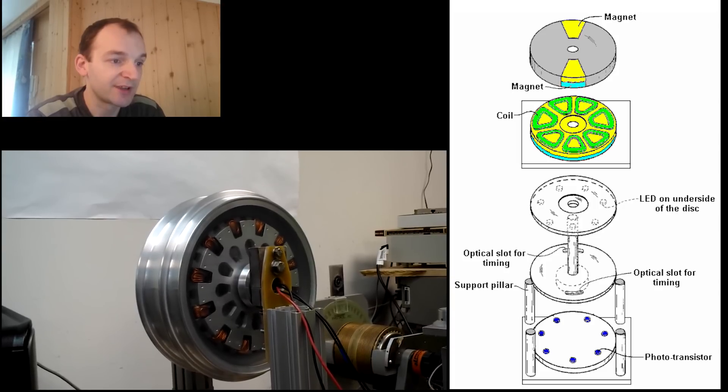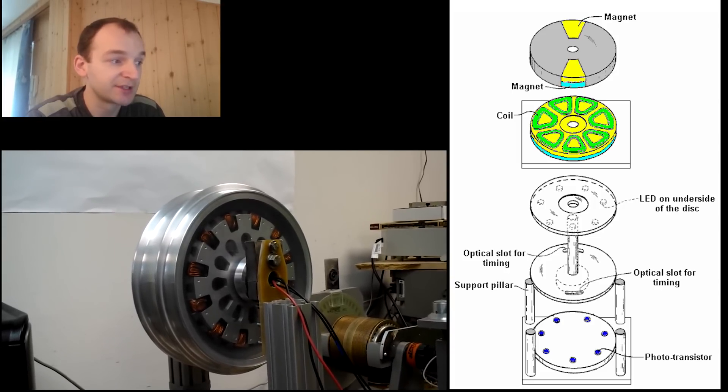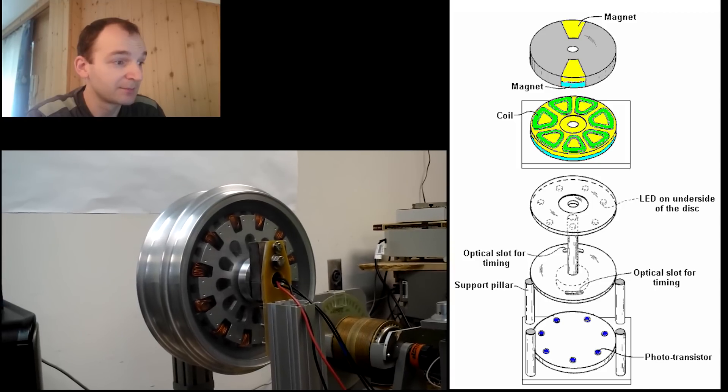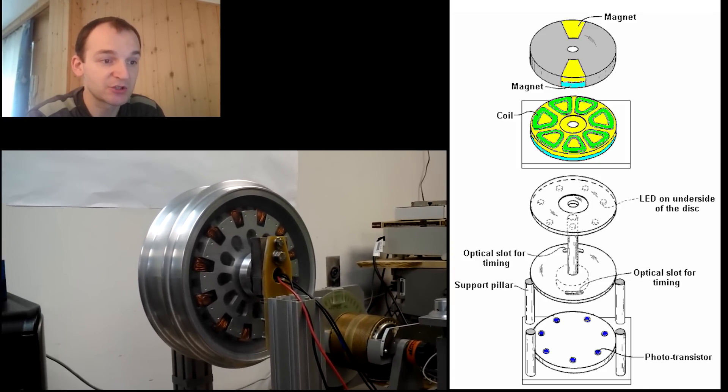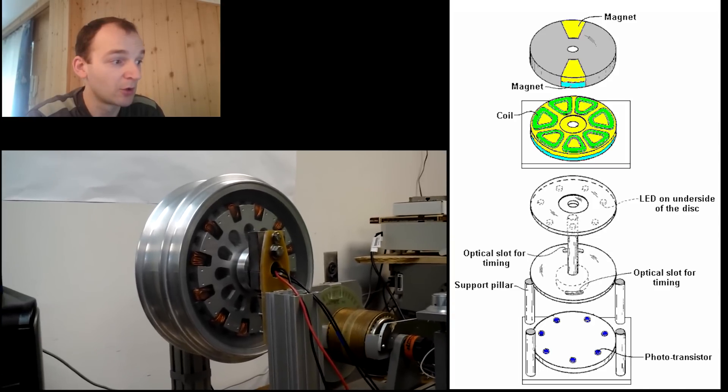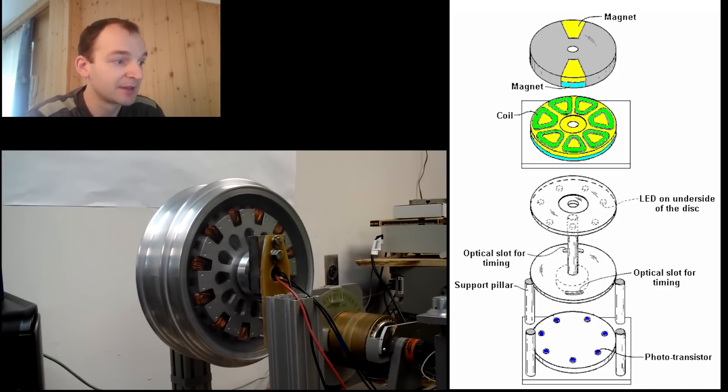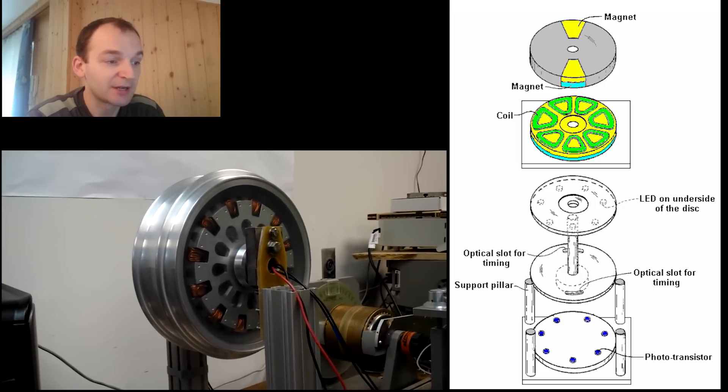The LEDs and the phototransistors are aligned with the centers of seven coils. The position and width of the slots controls which phototransistor gets switched on and for how long it remains powered up. This is a very neat and compact arrangement.